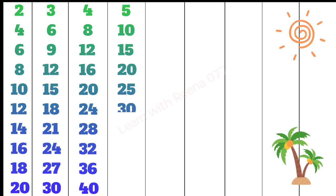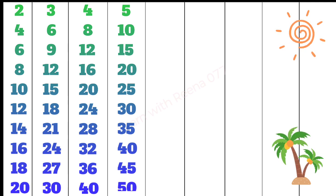5 6s are 30, 5 7s are 35, 5 8s are 40, 5 9s are 45, 5 10s are 50.